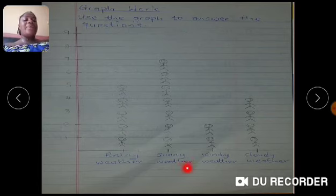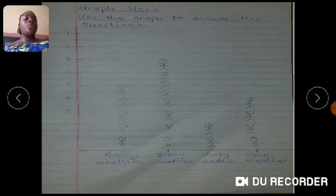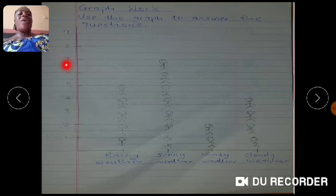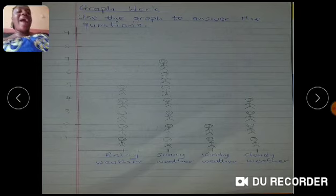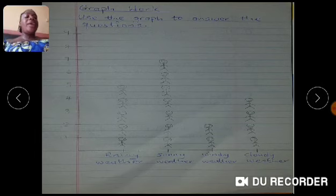Let's come to sunny weather. We are counting together: one, two, three, four, five, six, seven. Let's drag it and see if it is seven. So seven people liked sunny weather.